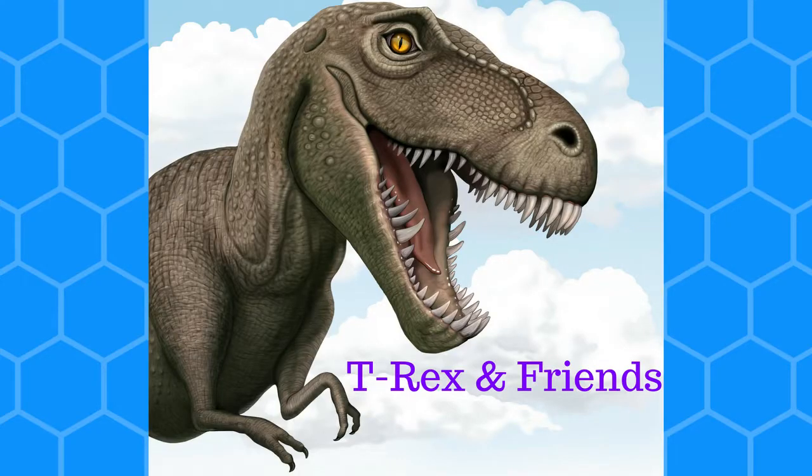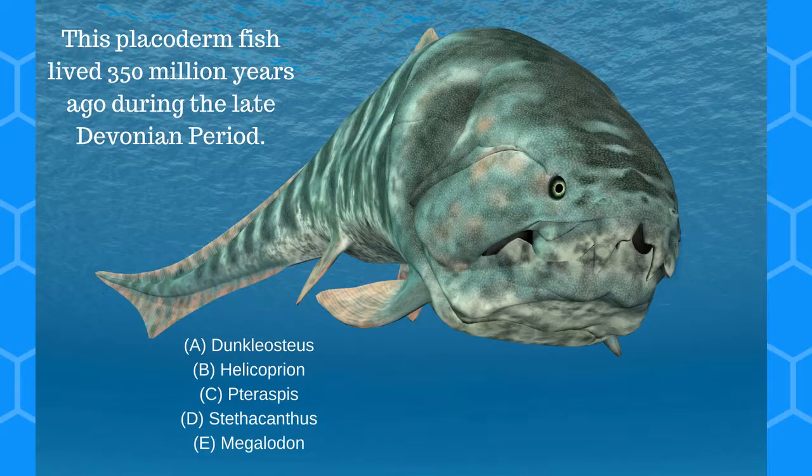Question 3. This placoderm fish lived 350 million years ago during the late Devonian period. A. Dunkleosteus, B. Helicoprion, C. Pteraspis, D. Stethacanthus, E. Megalodon.